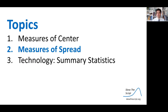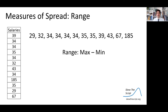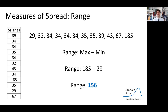Now let's talk about measures of spread. We want to figure out how spread out these data values are, not just the center. One way to do that is to find the range: take the maximum and subtract the minimum. In this case, the maximum salary was $185,000 and the minimum was $29,000, giving a range of $156,000.